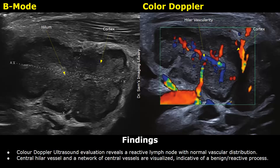Color Doppler ultrasound evaluation reveals a reactive lymph node with normal vascular distribution. A central hilar vessel and a network of central vessels are visualized, indicative of a benign or reactive process.